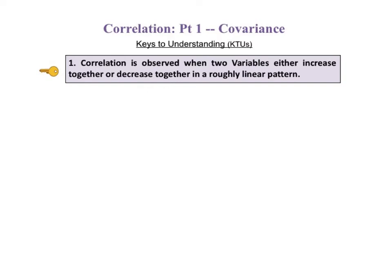The first key to understanding tells us that correlation is observed when two variables either increase together or decrease together in a roughly linear pattern.